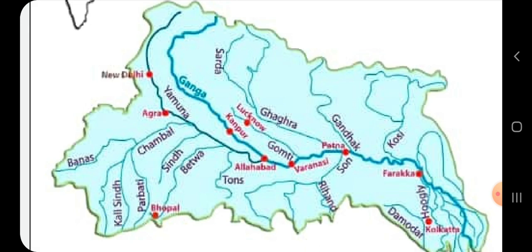As the river Ganga enters West Bengal, it gets divided into two streams. One of the streams is called the Hoogli, which flows through West Bengal. The other stream flows into Bangladesh, where it is known as the Padma. The Yamuna river joins the Ganga near Allahabad.